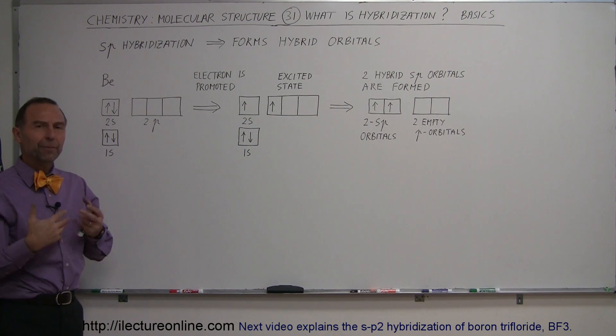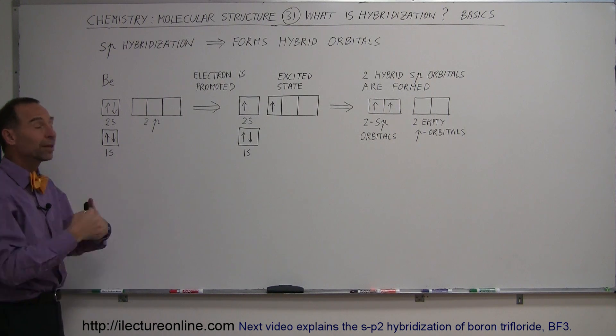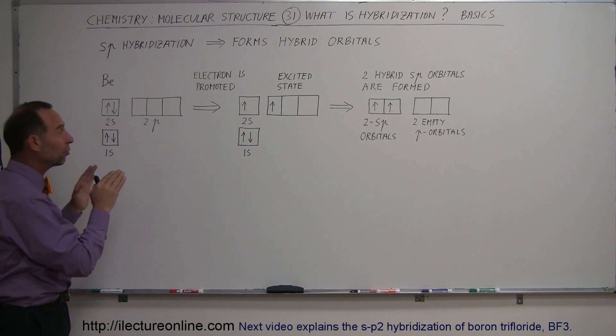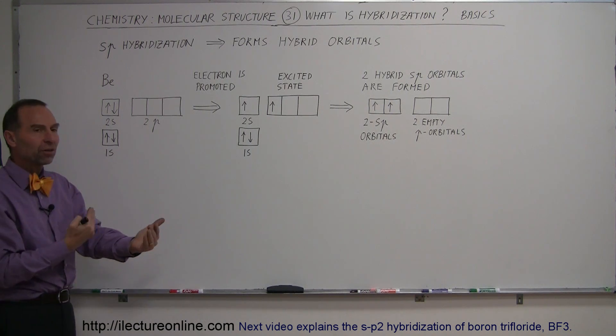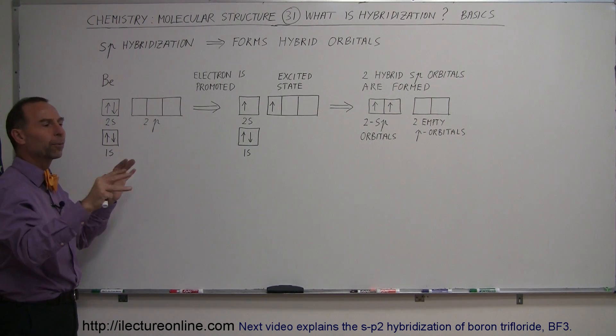Now that, of course, would not be very beneficial to the atom unless you can get something out of it. And the reason why this will happen is because once that happens and the hybridization process takes place where two new orbitals are created out of the existing orbitals it is now able to make bonds.